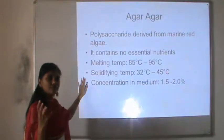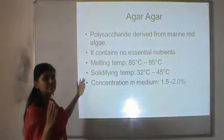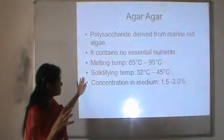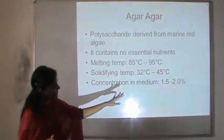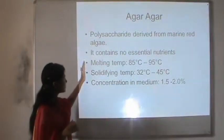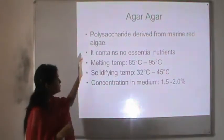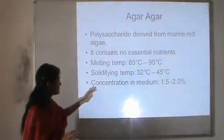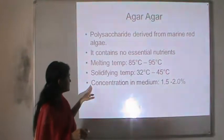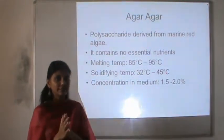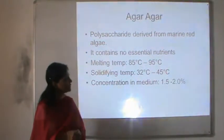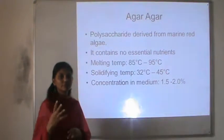When agar agar is boiled above 96°C it melts completely, and when the melted agar solution is allowed to cool down to a temperature of 45°C it starts solidifying, which is one of the very important properties of agar agar to be used as a solidifying agent in microbiology. In the composition of any solid nutrient medium, the concentration of agar agar to make it solidified is very important, and the concentration of agar agar in the medium can be anywhere between 1.5 to 2 percent — 1.5 percent can also give a good solidified medium.